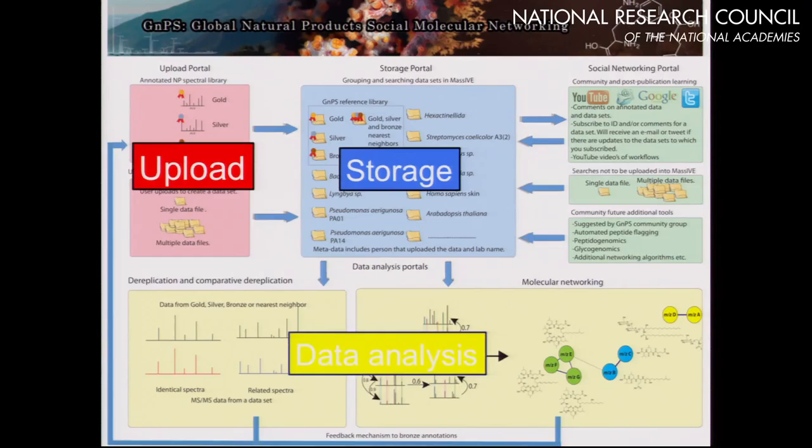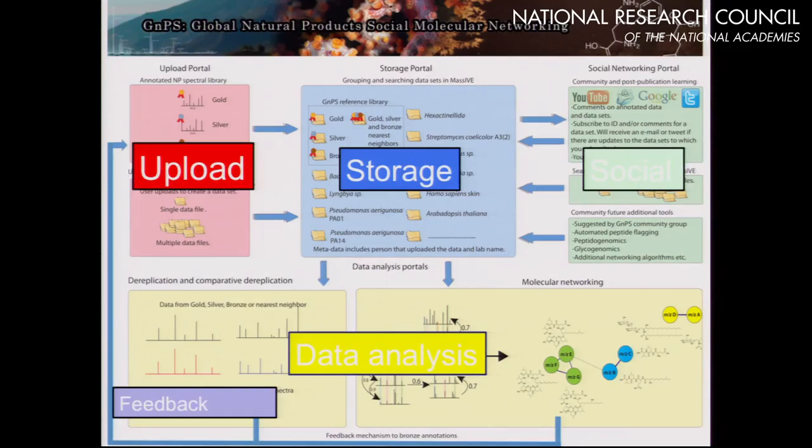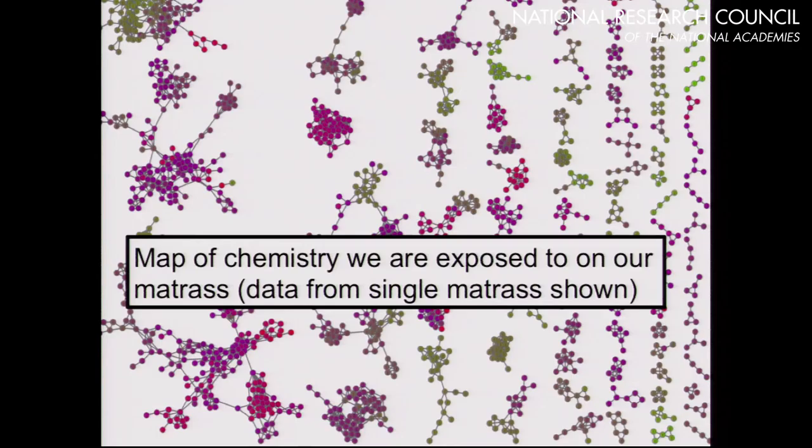What does this analysis infrastructure contain? It has an upload feature, a storage feature, and a data analysis feature — both for de-replication, which you can also call finding known unknowns — but it also provides molecular networking. There's a social feature, and nowadays we even have predictive computing, which I won't have time to go into.